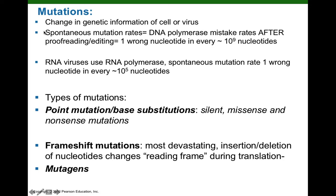Let's think about spontaneous mutation rates — the mistakes made when genetic information is copied. For all cells, the spontaneous mutation rate is the mistake rate of DNA polymerase following proofreading. After proofreading, DNA polymerase has a mistake rate of one mistake in every 10 to the 9th nucleotides — one mutation per 10^9 nucleotides. DNA viruses would have the same spontaneous mutation rate, one mistake per 10^9 nucleotides. That's a pretty low spontaneous mutation rate.